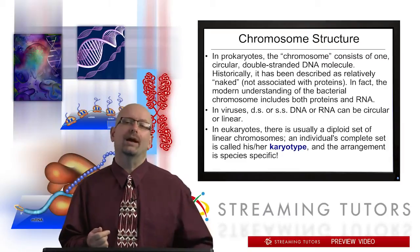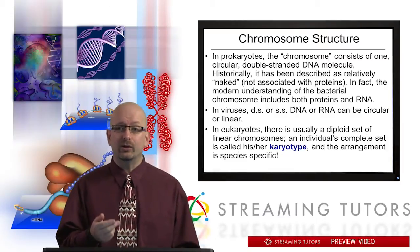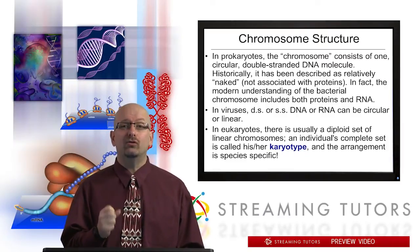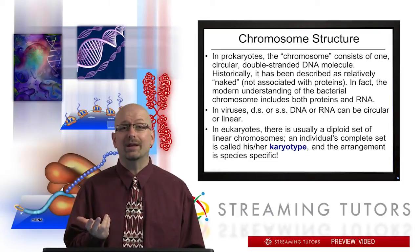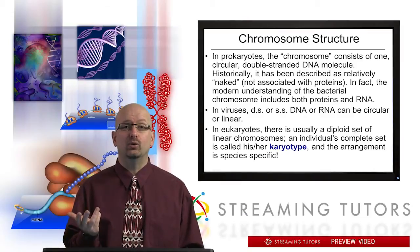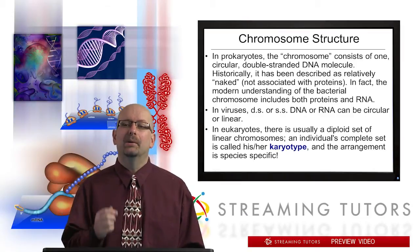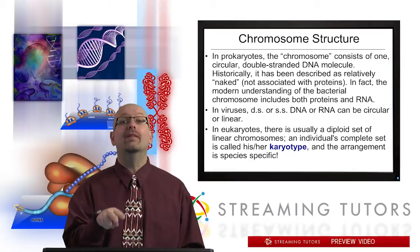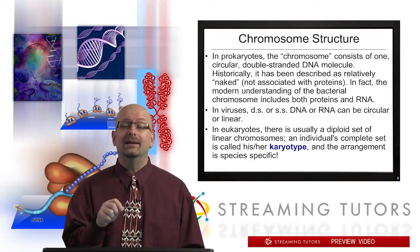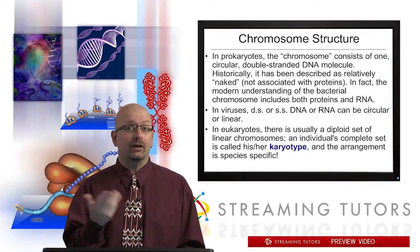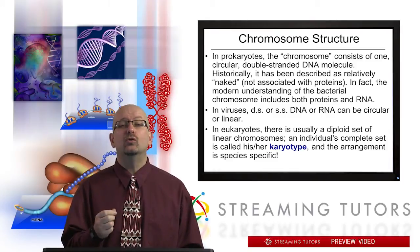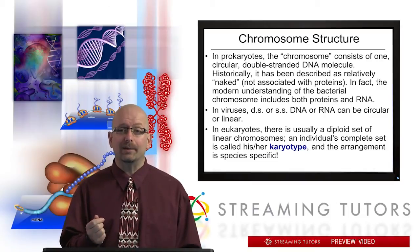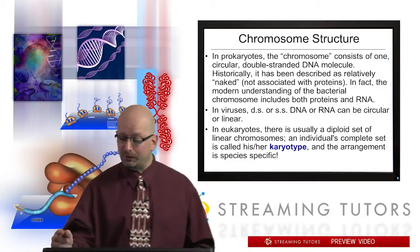But we want to focus on eukaryotes. In eukaryotes, there are a diploid set, meaning the chromosomes are always in pairs. The actual number is not that relevant — it can be anywhere from two to in the hundreds — but they're in pairs and they're linear. An individual's complete set is referred to as a karyotype, and the arrangement is species-specific.